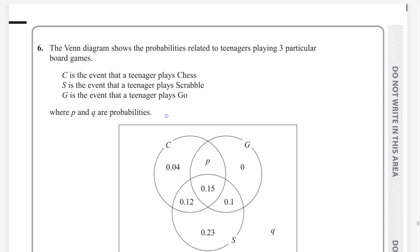Hello everybody, welcome back to my math channel Mathweb. In this video, I am going to answer question number 6 from Pearson and Excel A-level exam for Statistics 1. This exam is taken in May session, year 2024. Paper reference code is WST01-01. This is the last question of this paper.